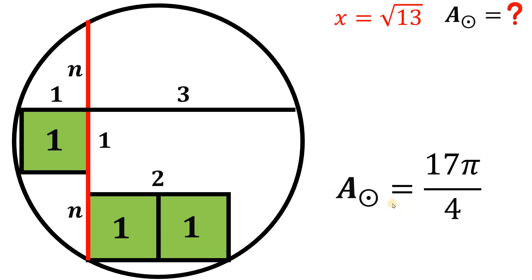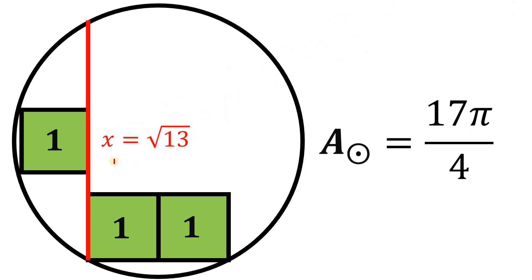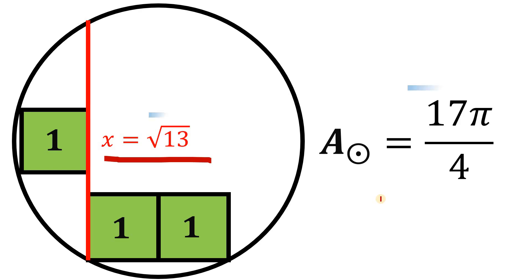So our final answers are: the length of segment x is square root of 13 units, and the area of the circle is 17 pi over 4 square units. And as always, we are done.